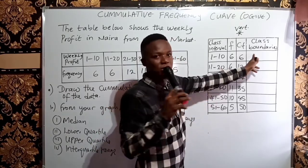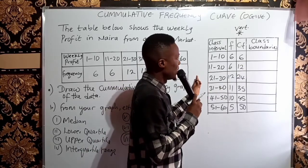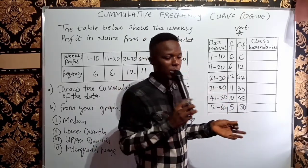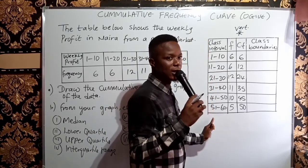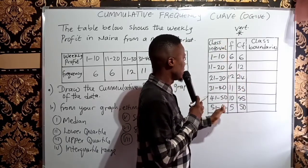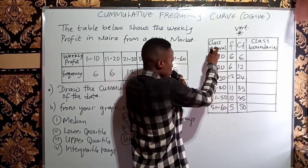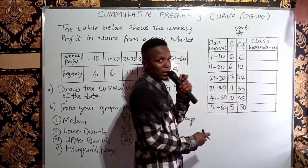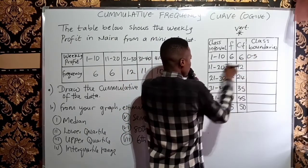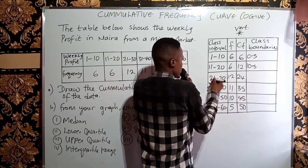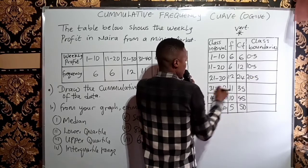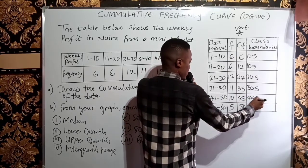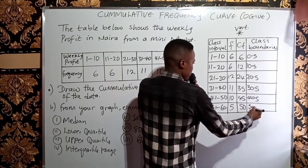After the frequency, you need to get your class boundaries. The class boundary is got from the class interval, but the class boundary we need is the upper class boundary. To get the lower class boundary, remove 0.5 from the lower class interval. So from 1, remove 0.5 to get 0.5; from 11, remove 0.5 to get 10.5; from 21, remove 0.5 to get 20.5; from 31, remove 0.5 to get 30.5; from 41, remove 0.5 to get 40.5; from 51, remove 0.5 to get 50.5.